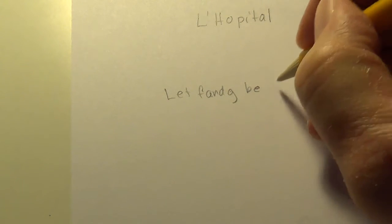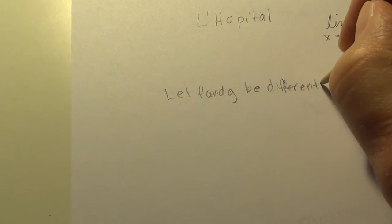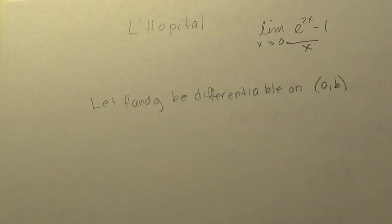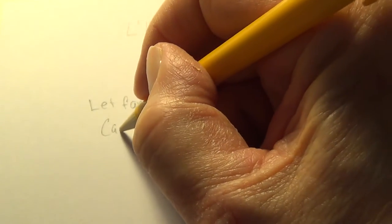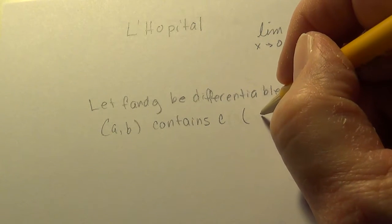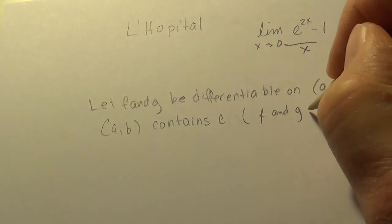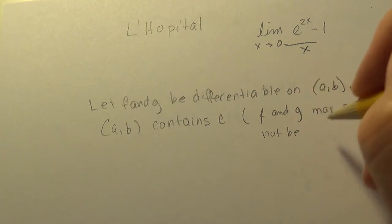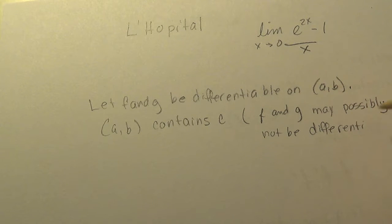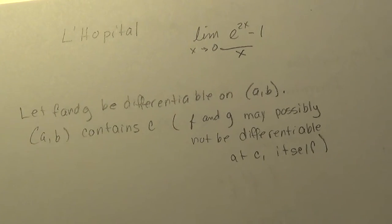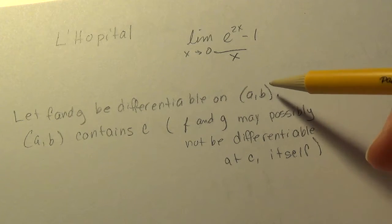So let me explain what qualifies for the use of L'Hôpital. We saw this one we came to a dead end, so we're going to come back and do this one after we learn L'Hôpital's theorem. Let f and g be differentiable on the open interval (a,b). The interval (a,b) contains c, and in parentheses, f and g may possibly not be differentiable at c itself.